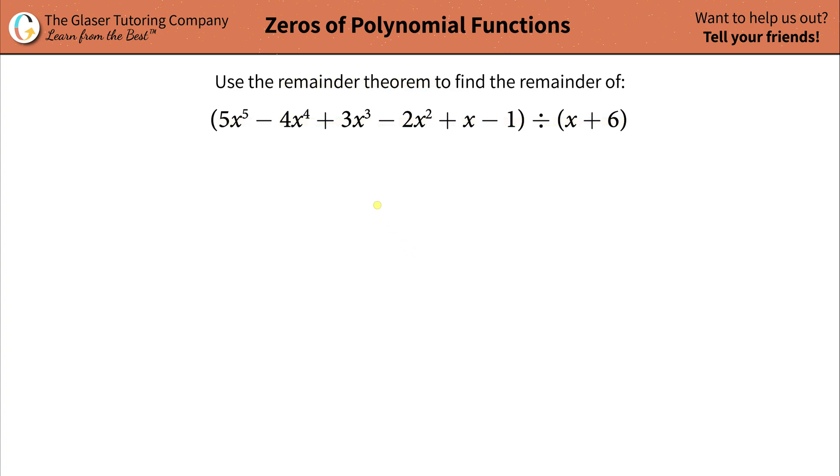So we have to keep in mind what the remainder theorem is. The remainder theorem basically says that when you have a function f(x), which in this problem, that's what this thing represents, and it's being divided by a linear function of the kind that has this form x minus k.